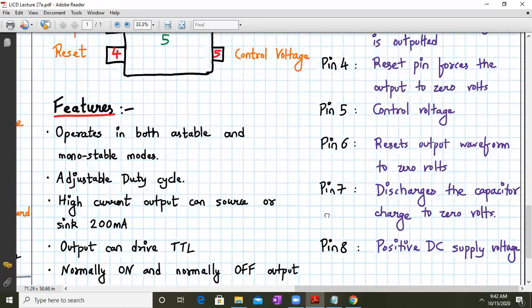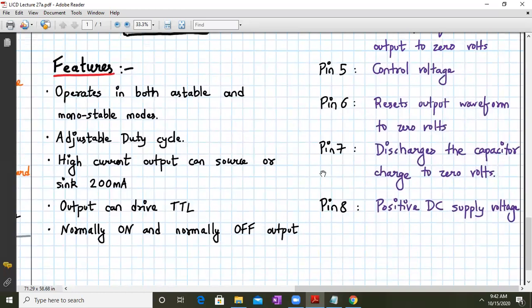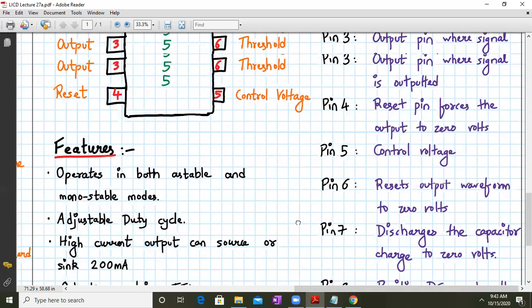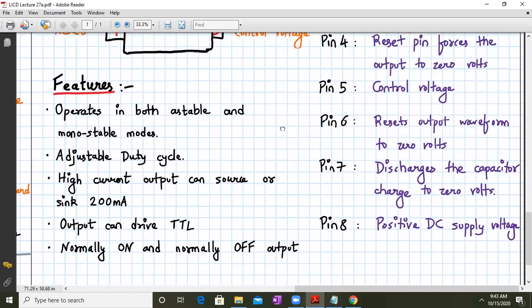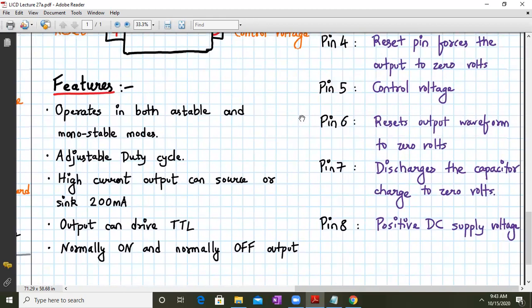So these are some of the features which I've taken from the data book. That is, it operates in both stable mode and monostable mode. I hope that by now we have seen studied circuit OPAMP as a stable multivibrator and as a monostable multivibrator. So your 555 timer also will work in astable and monostable mode. It has adjustable duty cycle. Now what is duty cycle? T on upon capital T. That is capital T is T on upon T on plus T off. So basically that is the duty cycle for a square wave form. The duty cycle will be 50%.